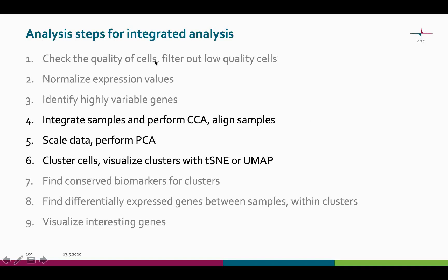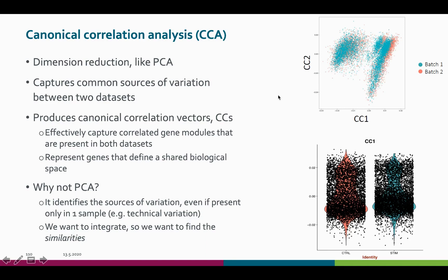After we have performed the initial steps to two samples, it is time to integrate them. We use canonical correlation analysis to align the samples. After this, the samples are joined into one R-object and treated similarly as in the basic one-sample analysis. The data is scaled, PCA is used to reduce the dimensions, after which we can again cluster the cells and visualize our clustering results.